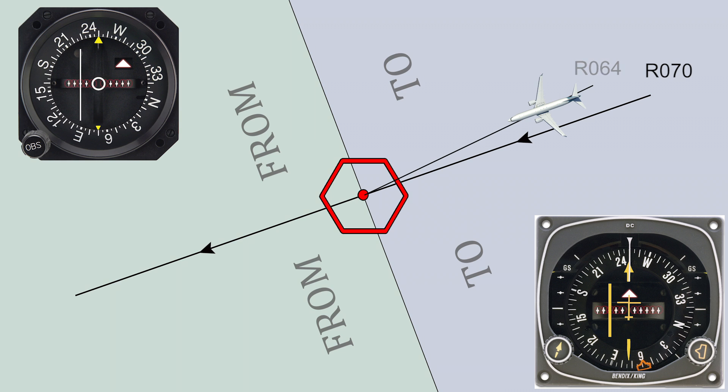Notice it moved 3 dots. Each dot on this indicator represents an error of 2 degrees with a maximum error of 10 degrees which is equal to 5 dots. Any deviations that are 10 degrees or more will be indicated the same, by a full deflection.